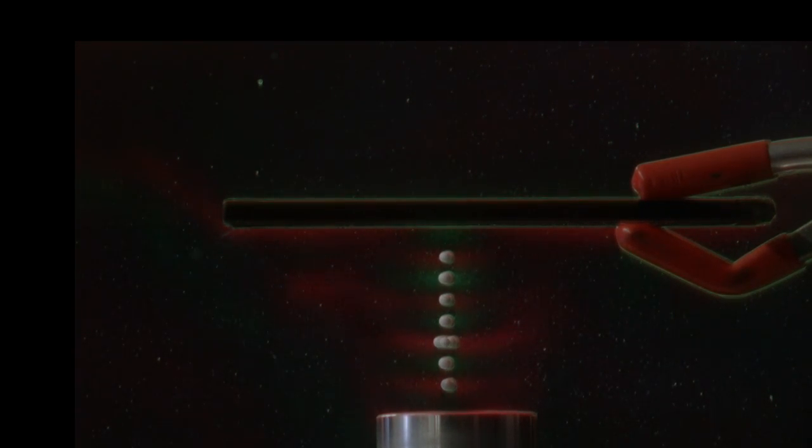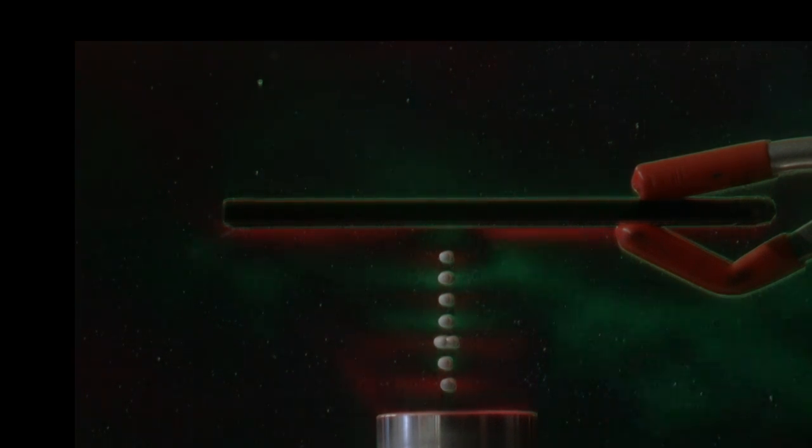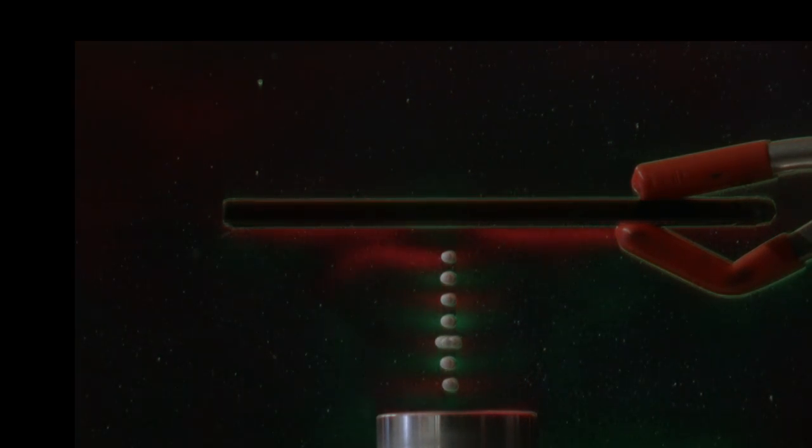You see the balls settle down where there are bands of color. Those bands of color are rapid changes of pressure or density. Those are the pressure antinodes. That is where the balls settle down.